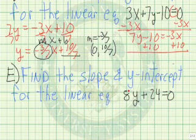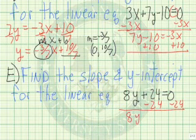Lastly, let's see if we can find the slope and y-intercept of an equation of the form 8y plus 24 equals 0. Notice we want to solve for y, so the first thing we need to do is move the 24 to the other side of the equation. So we're left with 8y, this cancels out, equals negative 24.